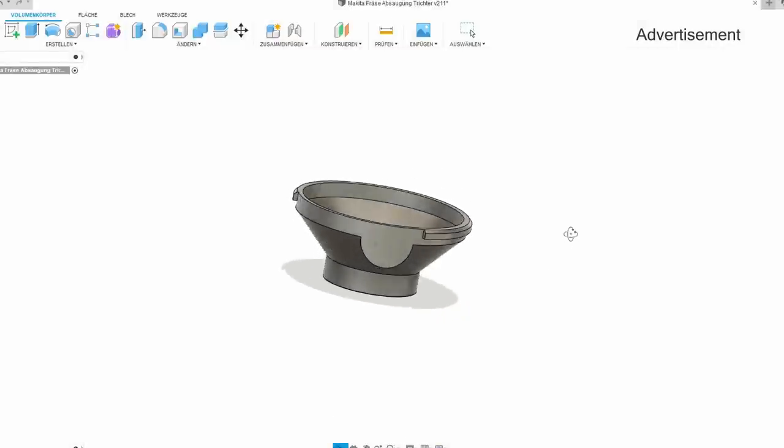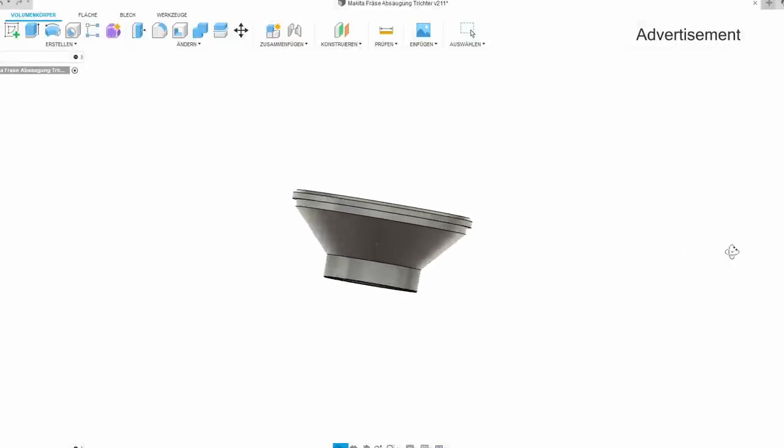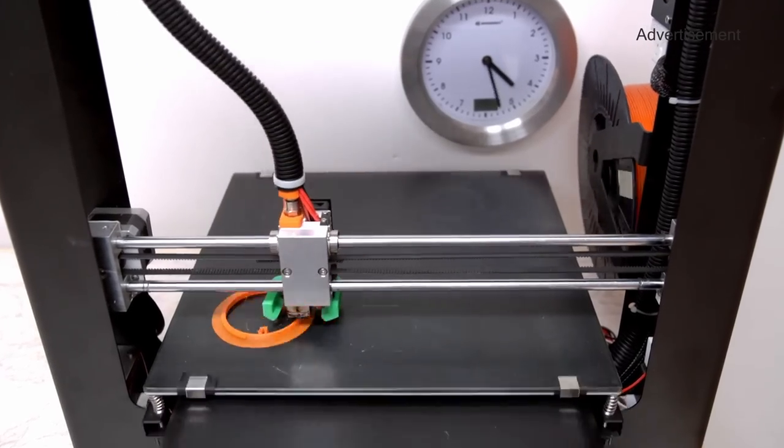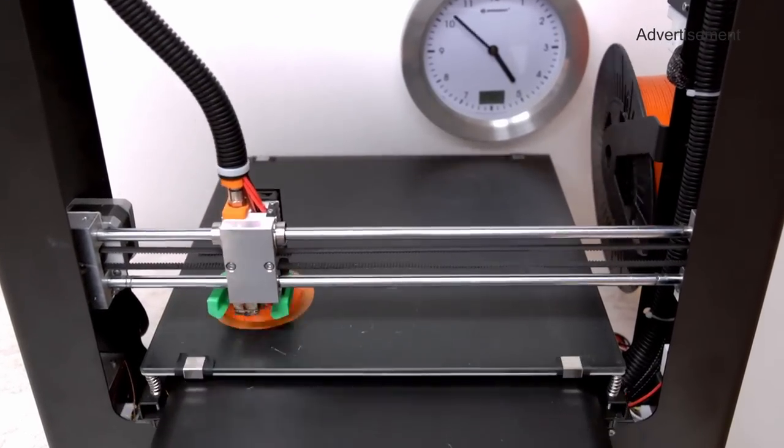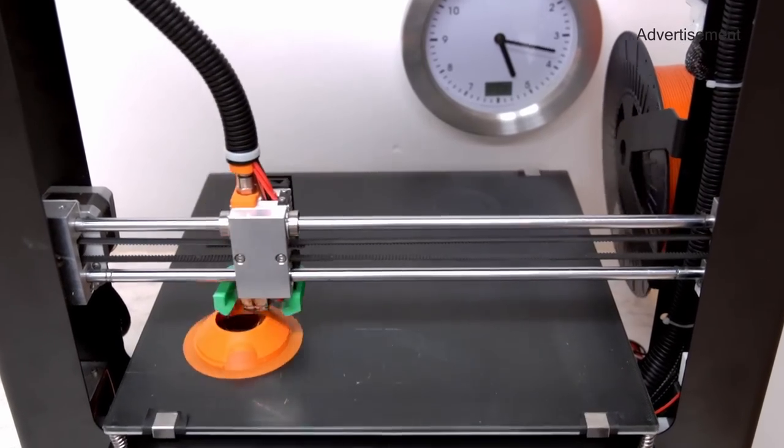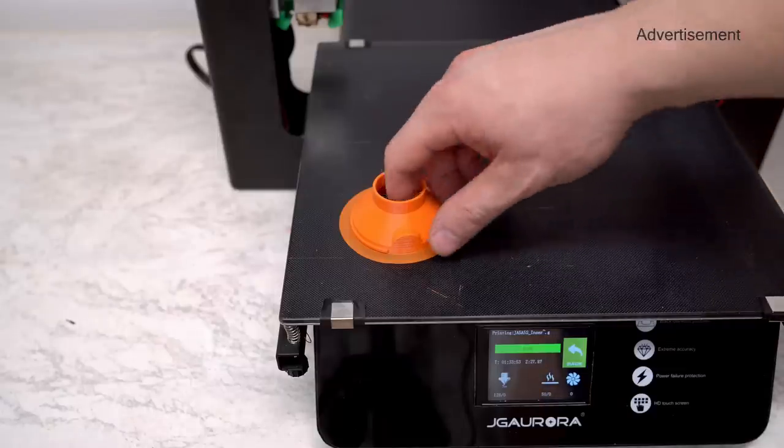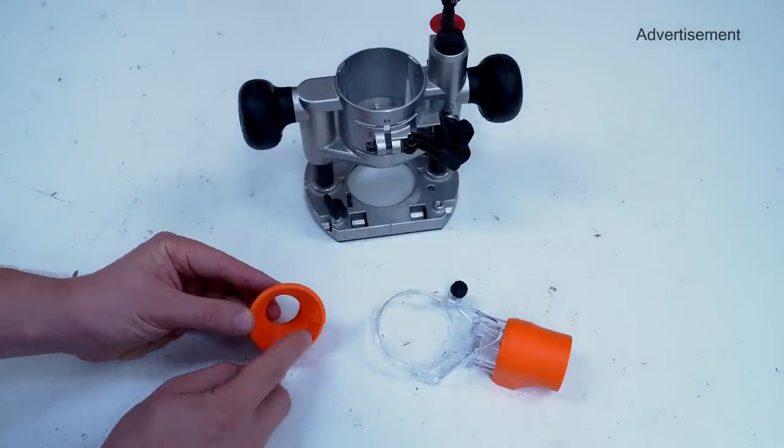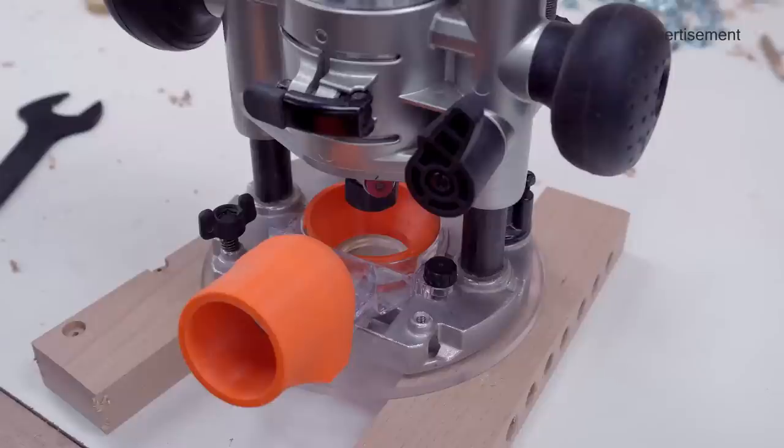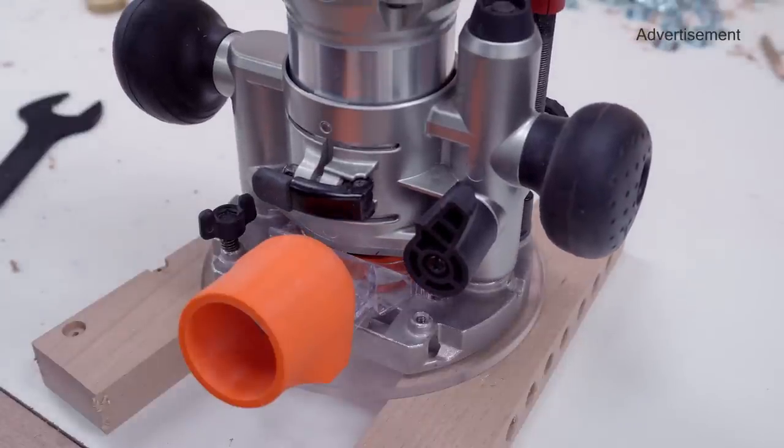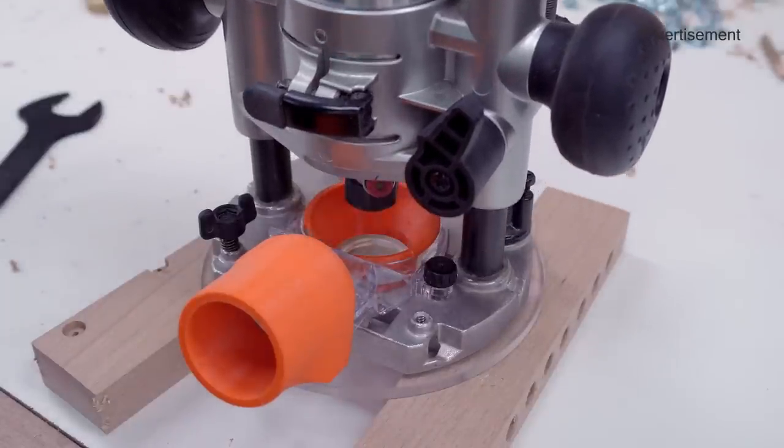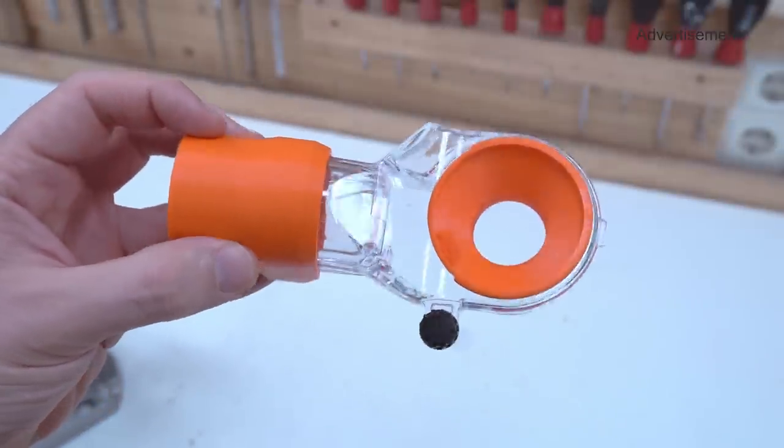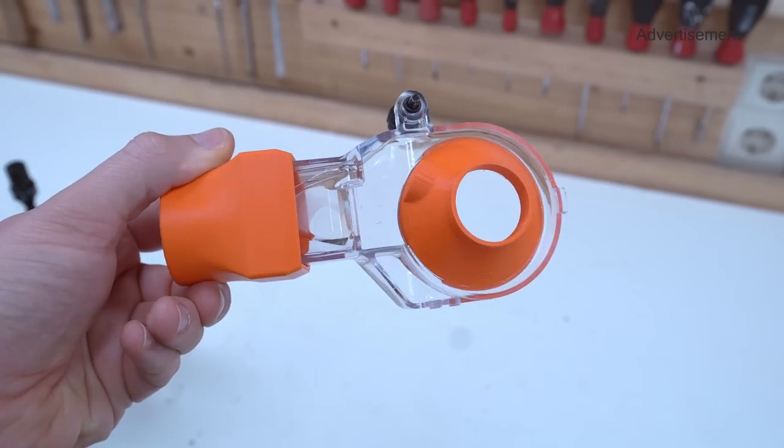So I modeled up that part in Fusion and printed it. This pocket is there to accommodate the spindle lock when the router is plunged all the way down. I also designed a version of that funnel that will snap into place, but I think I will simply glue this one on.